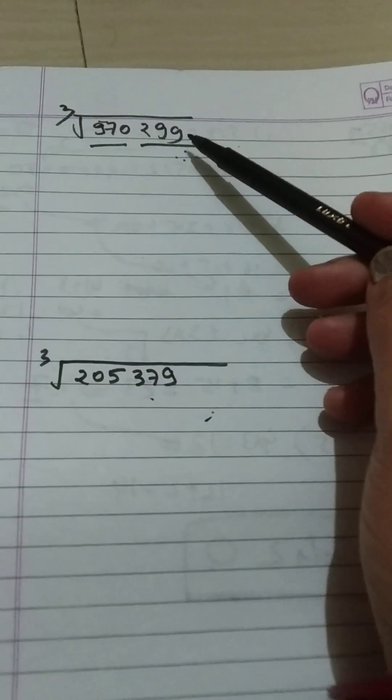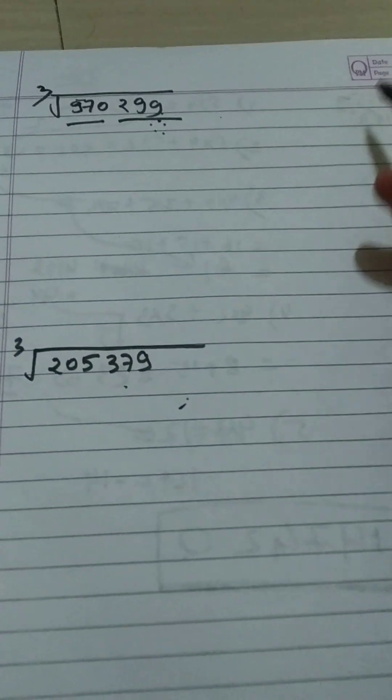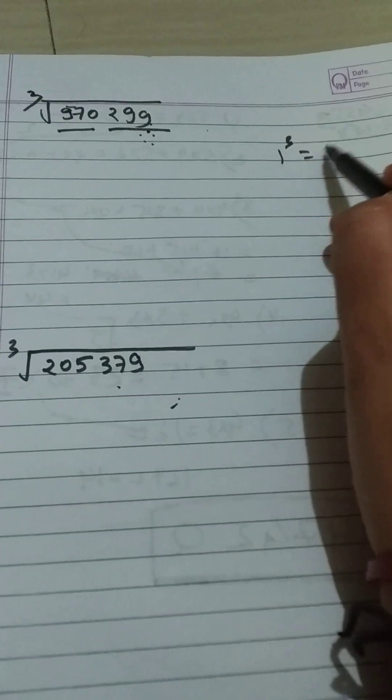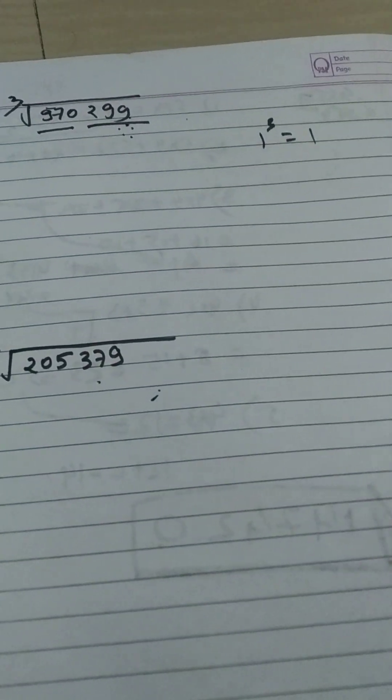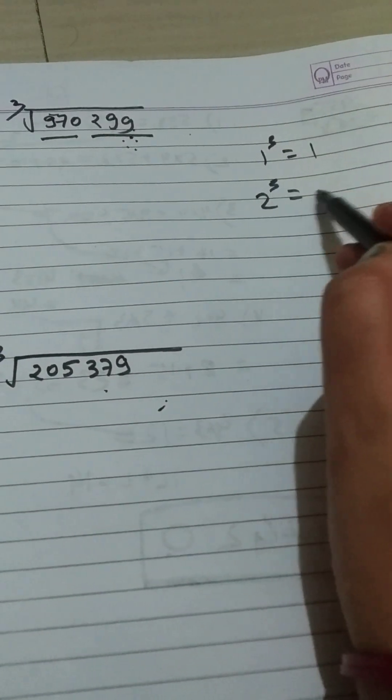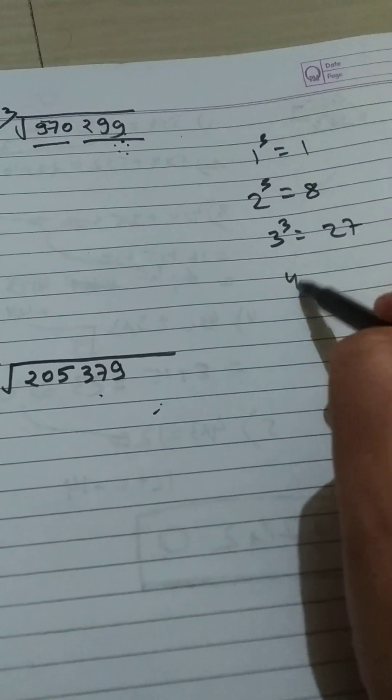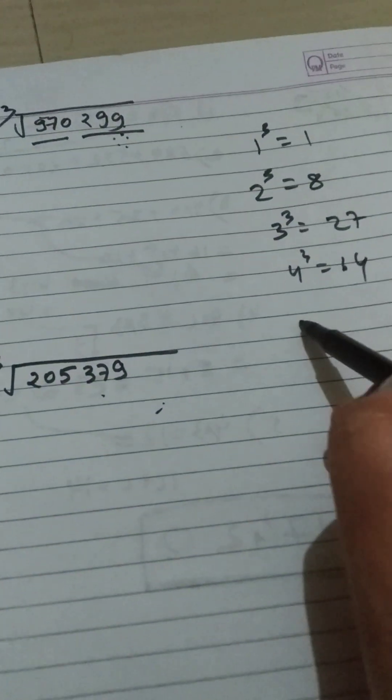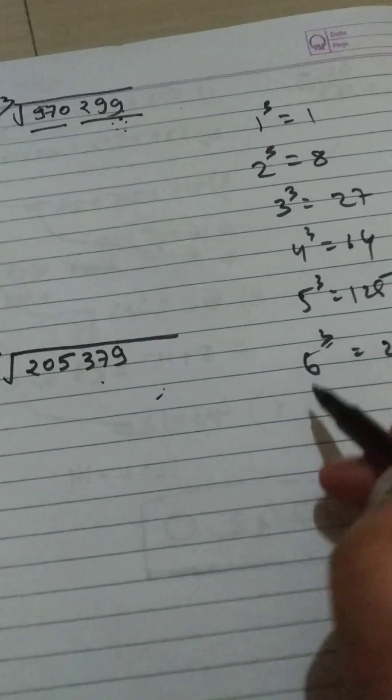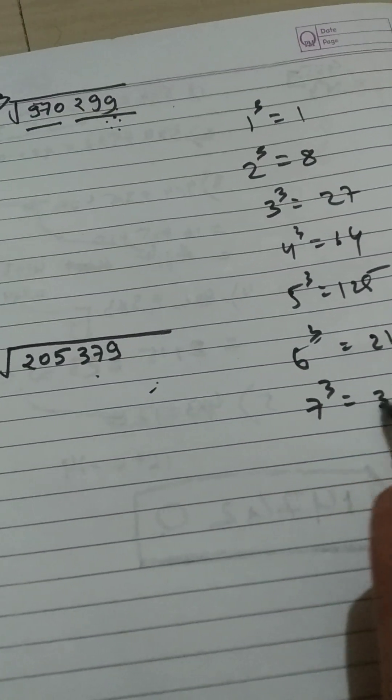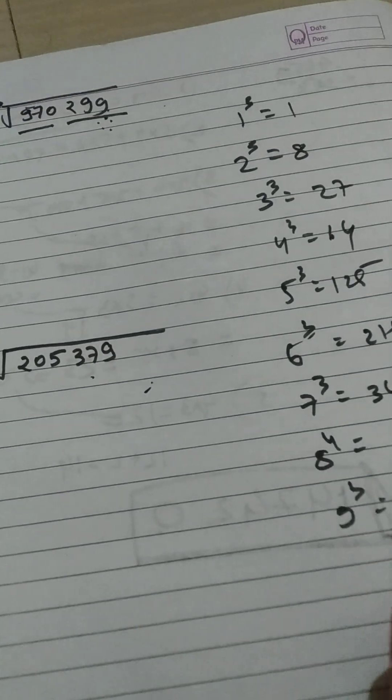Where this 299, the unit digit of 299 is 9. So we will see that from 1 to 9, which cube has unit digit 9. 2³ is 8, 3³ is 27, 4³ is 64, 5³ is 125, 6³ is 216, 7³ is 343, 8³ is 512, 9³ is 729.